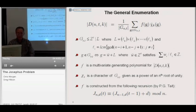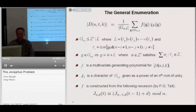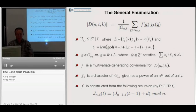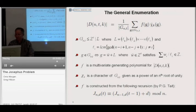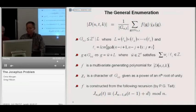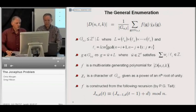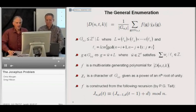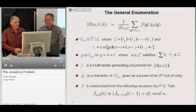The f that appears in the general enumeration formula is a complex multivariate generating polynomial, and the function chi sub k that appears is a character of g n t given as a power of an nth root of unity. We can start to the generating function f from a recursive congruence shown at the bottom of the slide, which dates back to 1898 in a paper by P. G. Tate, and has also been discovered many times, including by Greg when he was an undergraduate student of mine in 1977 at Cal State East Bay, located in Hayward, California.